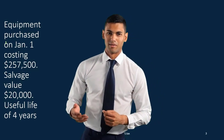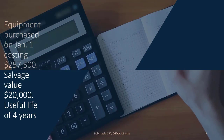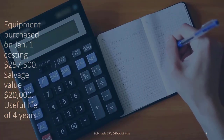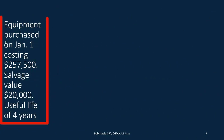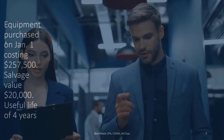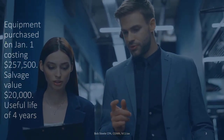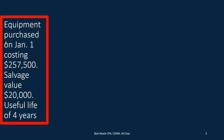You'll recall from prior periods that in the adjusting process, we record the adjusting entry for depreciation as a debit to depreciation expense and a credit to accumulated depreciation. We had not talked about how to calculate that depreciation at that time — it was just given to us as we focused on the concept of the adjusting process: reducing the book value of equipment and recording the expense over its useful life.